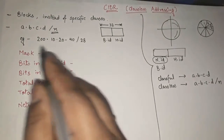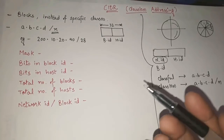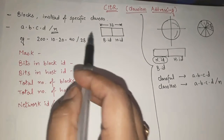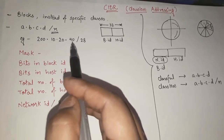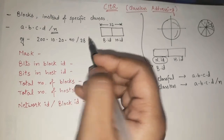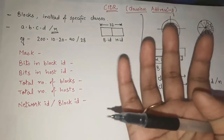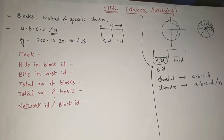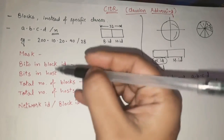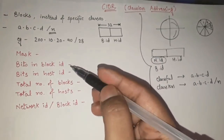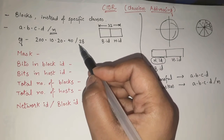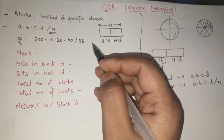These are the types of questions that can be asked in your academic or competitive exams. For example, this is one classless IP address: 200.10.20.40/28. Whenever the slash N form is given, you can say this is classless addressing because the mask is given. In classful addressing, we were not using any kind of mask — but whenever a mask is given, you can identify it as a classless address.